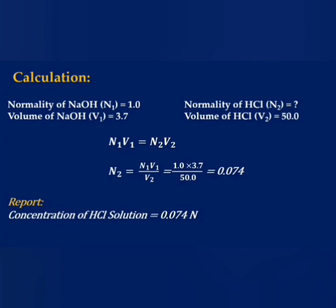These are the calculations. The normality of NaOH is 1.0, standardized by using oxalic acid. Using the known formulas, you will finally get 0.074.